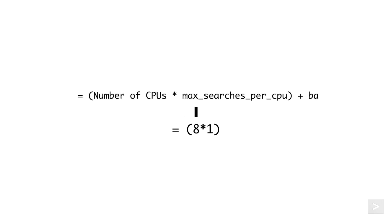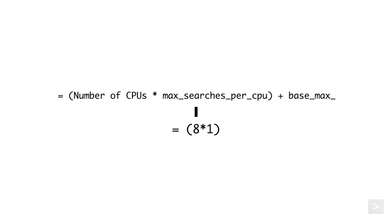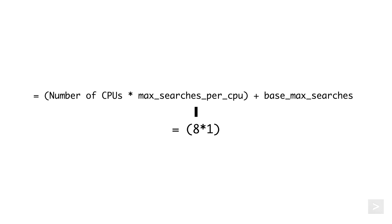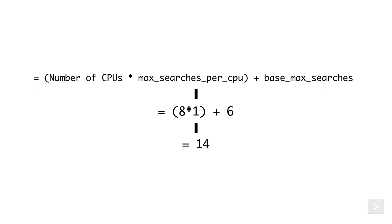Then it adds the base_max_searches attribute value that serves as a baseline constant to add to the maximum number of searches, which by default is 6. So if we had 8 CPUs and used the default values specified in limits.conf, we could run 14 searches simultaneously.